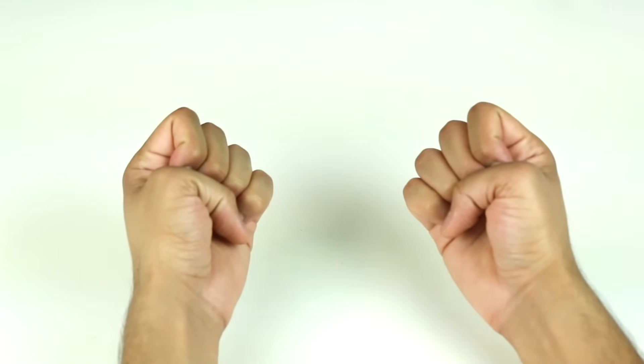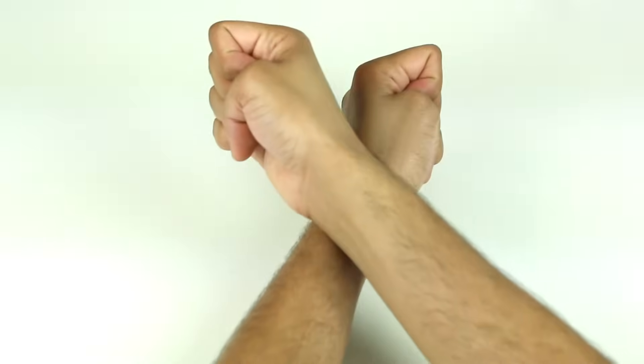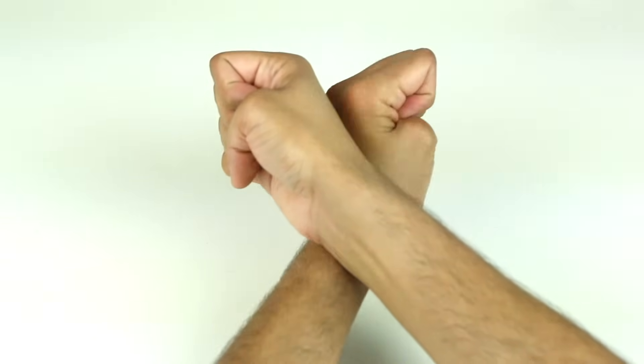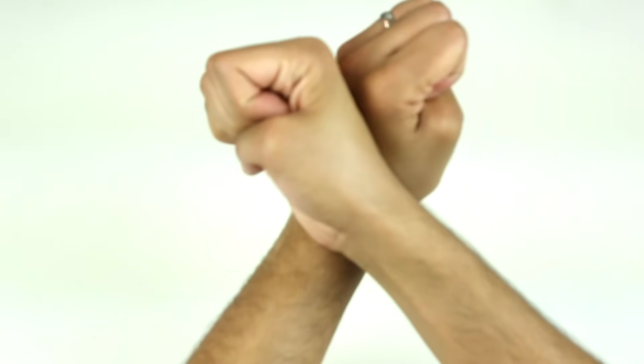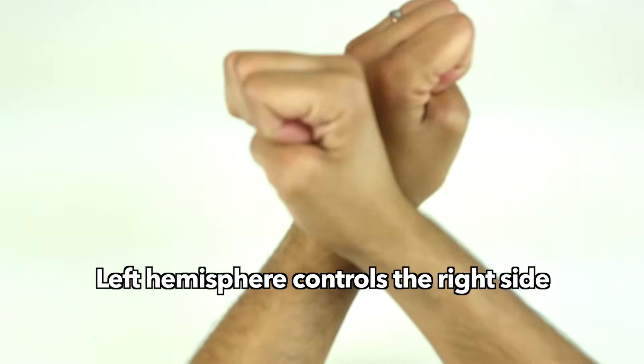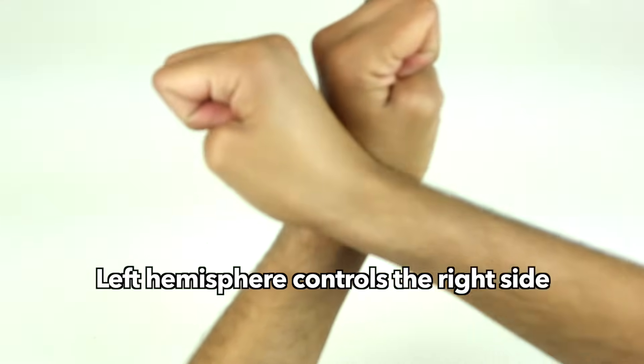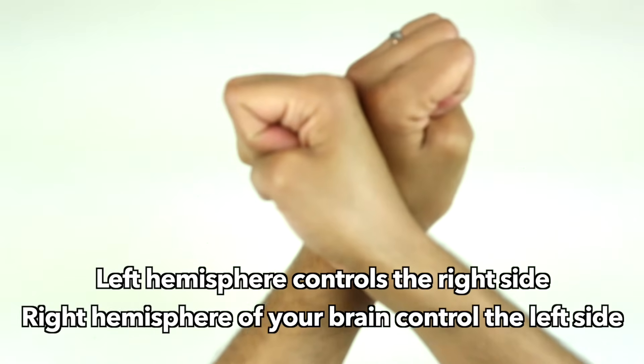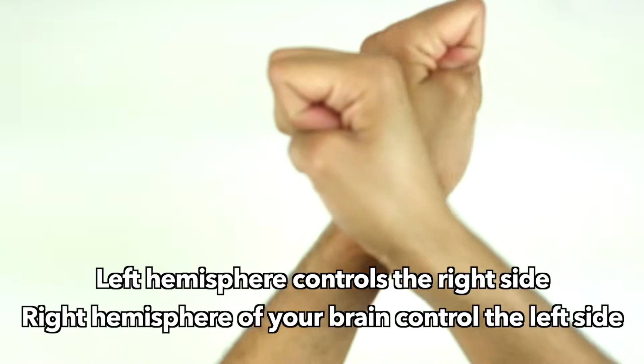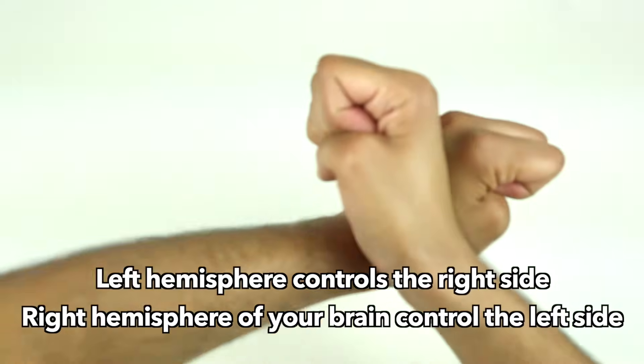Now take your hands, cross your wrists, and make the back of your hands touch each other. This will help you remember that the left hemisphere of your brain controls the right side of your body, while the right hemisphere of your brain controls the left side of your body.